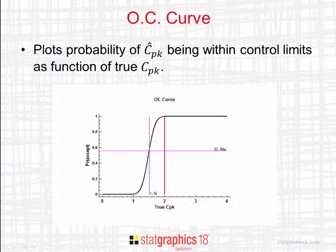It's also useful to plot the operating characteristic, or OC curve, associated with the capability control chart. The OC curve shows the probability that an estimated index, CPK hat, will be within the control limits as a function of the true value of CPK. If the true process CPK is 2, then the chance of getting an estimate within the control limits is very close to 1. If the true index falls to 1, there's almost no chance of getting an estimate within the control limits. If the true CPK is 1.5, then the estimated value will be within the control limits about 56% of the time.